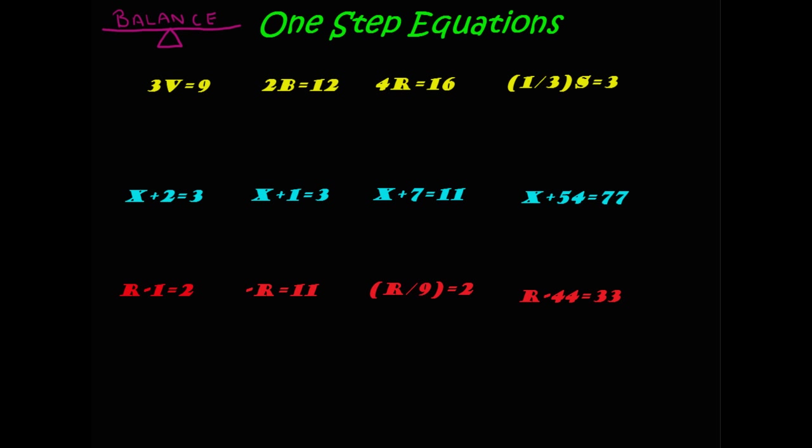Alright, so moving right along, we'll solve some one-step equations. Remember, the entire time, the balance between the left side and the right side. So, for the first one here, we have 3v equals 9. Well, in order to get solved for v, which is what our goal is in solving an algebraic equation, we want to solve for the variable. We're going to have to divide this by 3, so that these cancel.